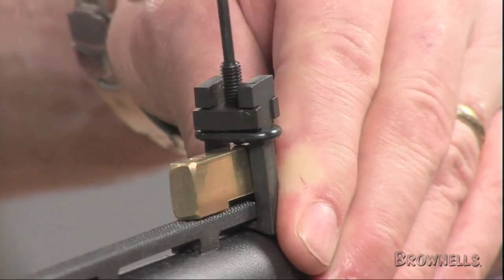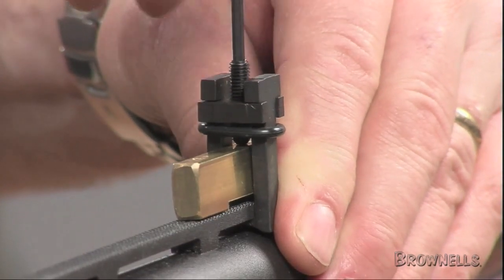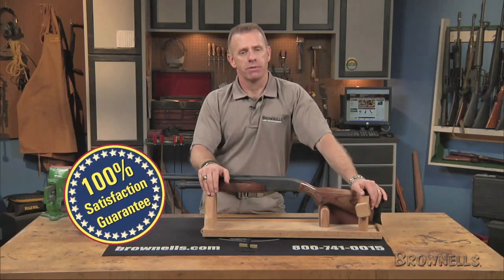The Murray's Vent Rib Tool is made in the USA and like all products sold by Brownells, it's backed by our 100% unconditional lifetime satisfaction guarantee.